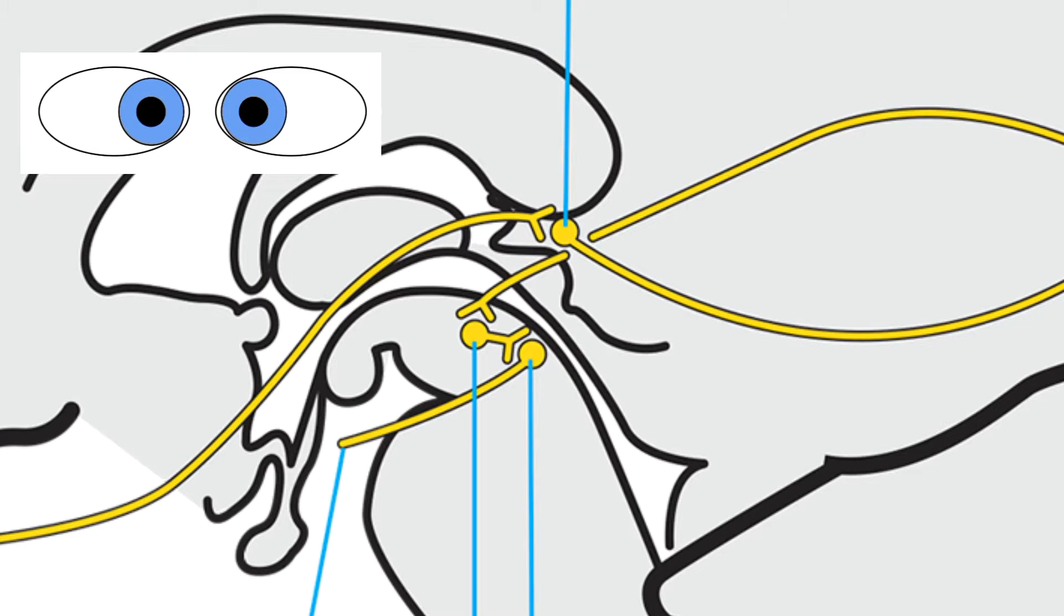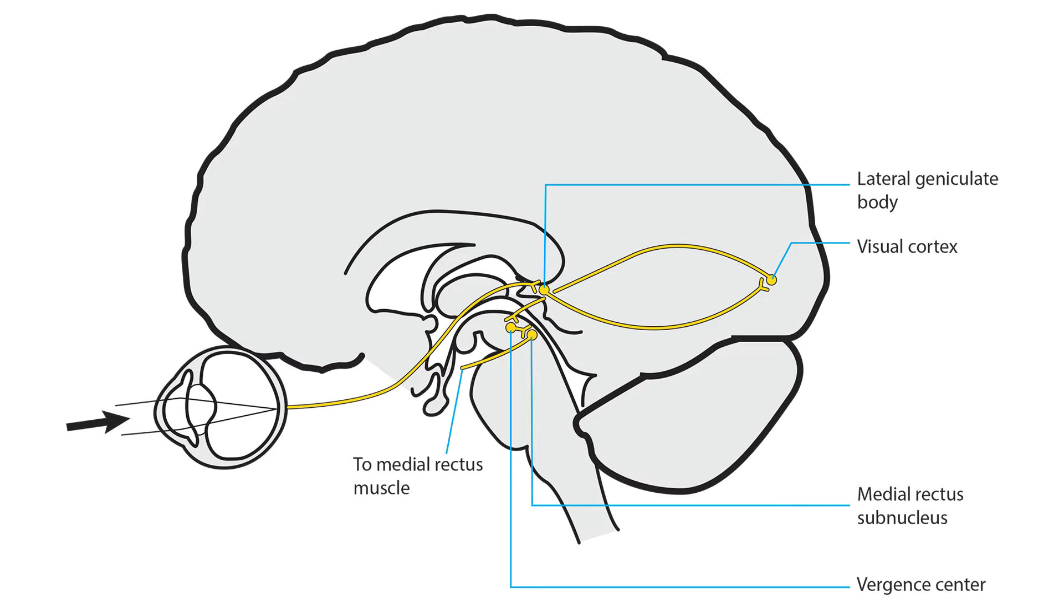When the viewed target recedes to a more remote location, this convergence pathway gets inhibited. The eyes diverge to become aligned for distance viewing. There are three ways to disturb the vergence system.